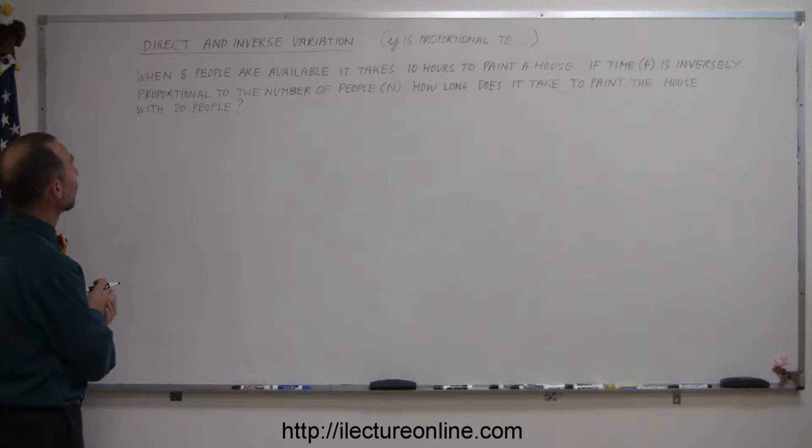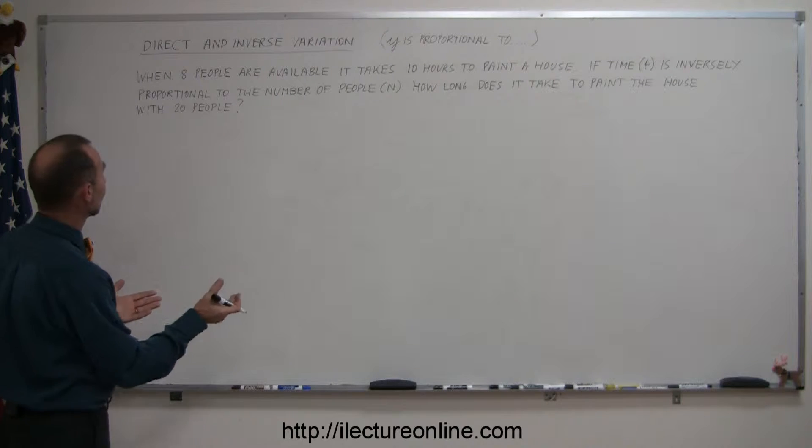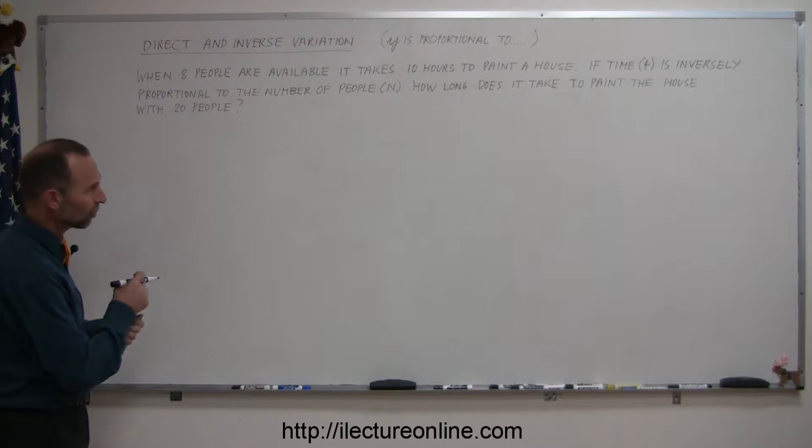The problem here reads, when eight people are available it takes 10 hours to paint a house. If the time t is inversely proportional to the number of people n, how long does it take to paint the house with 20 people?